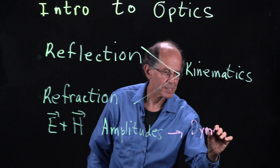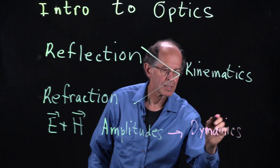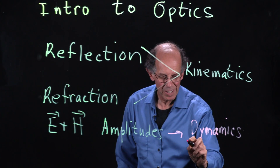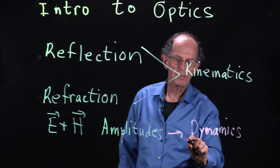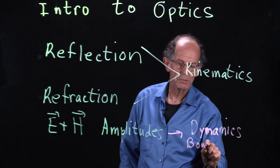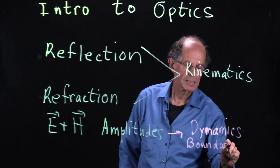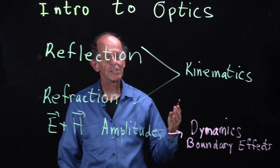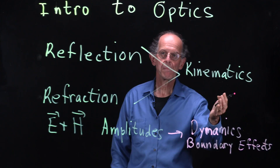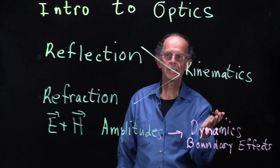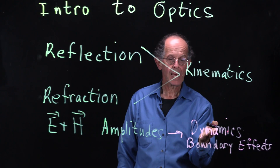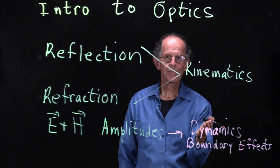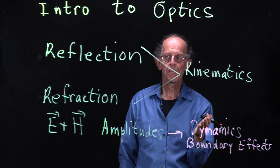Dynamics — if I spell it right, dynamics — are obtained by applying boundary conditions, or boundary effects if you prefer. The boundaries are what give us the interesting behavior of optics. I'm going to give you a qualitative description of a classic boundary effect in optics based on reflection.